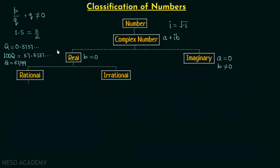Now we will talk about irrational numbers. Irrational numbers are not rational numbers — they are real numbers which cannot be expressed as the ratio of two integers. For example, pi equals 3.1415... In this case the decimals are non-terminating and also non-repeating, which means we cannot express pi in p over q form.